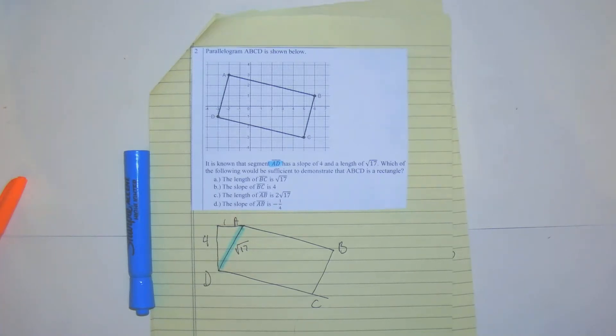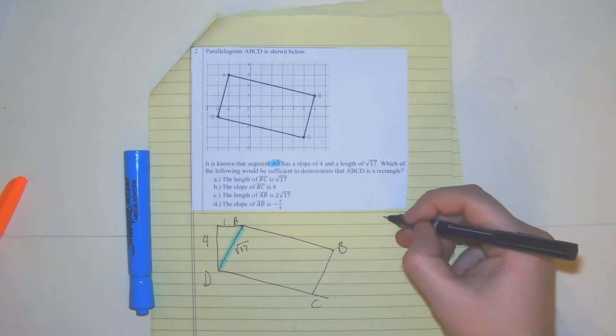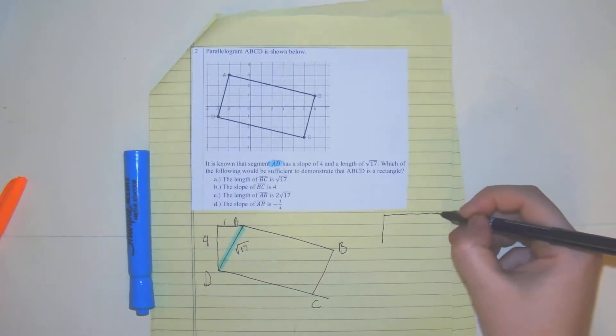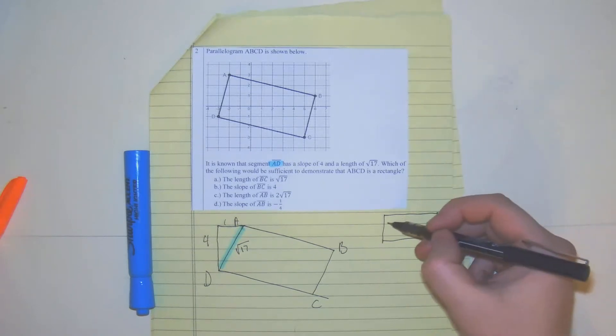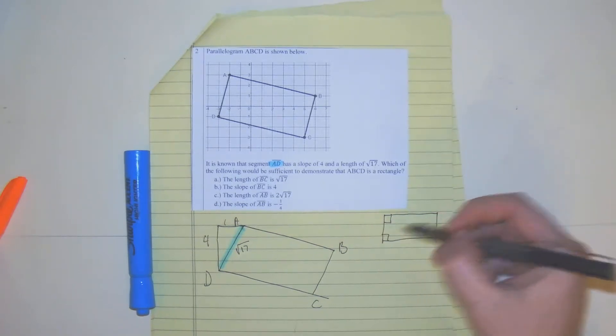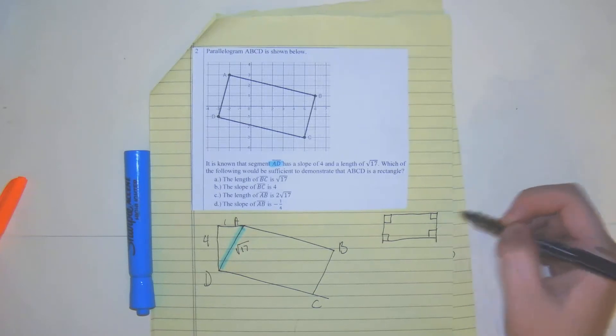So the key characteristic to a rectangle that differentiates it between a rhombus and a square and a parallelogram is the vertices all are right angles. We need to focus on that.